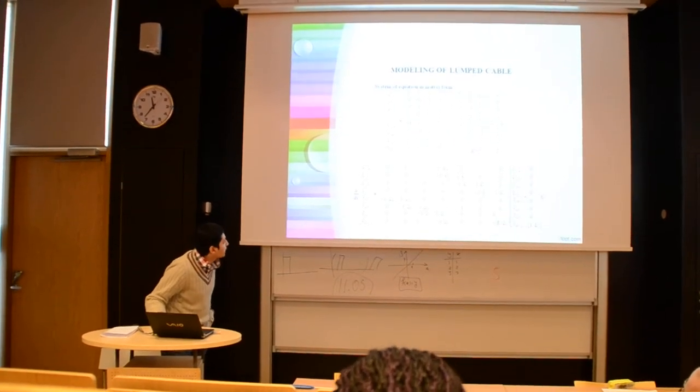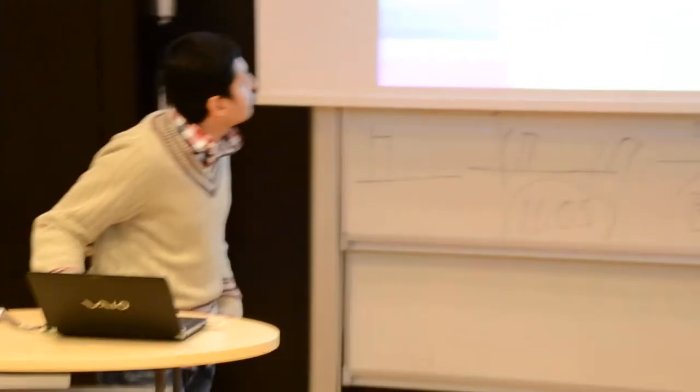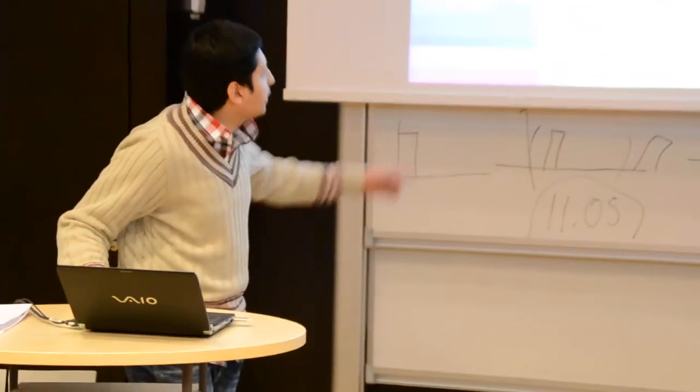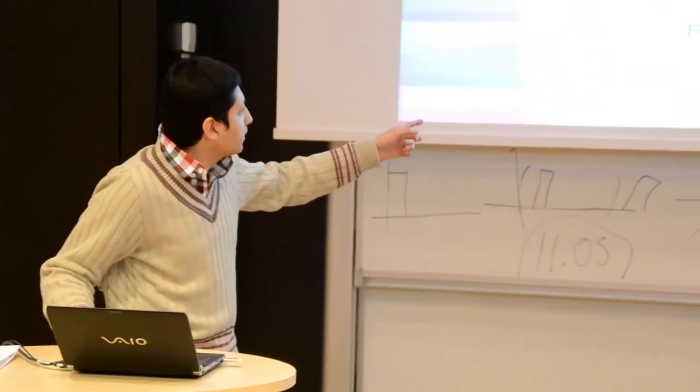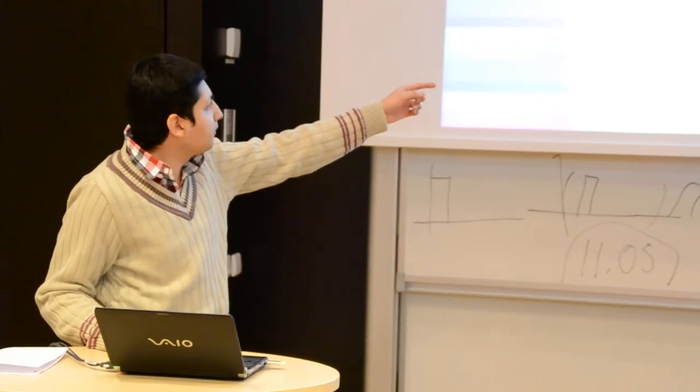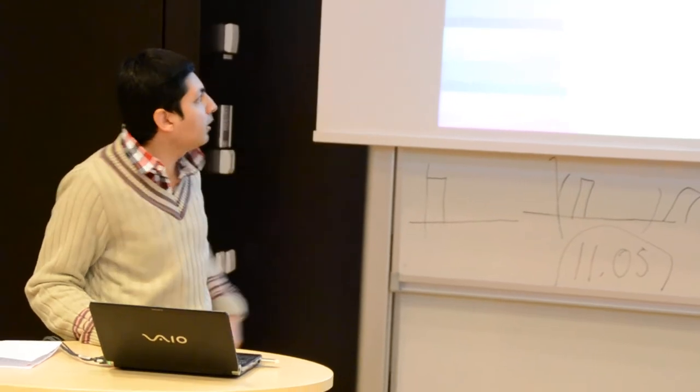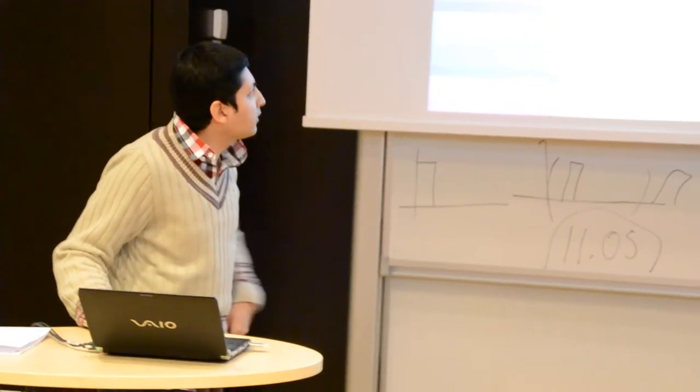And this is the ABC matrix. Here I generate the C matrix, and I generate C matrix for the voltage across C4 capacitance. And this is the C1 matrix.